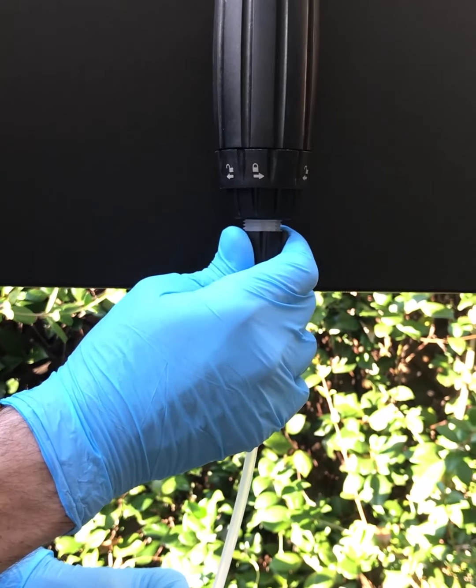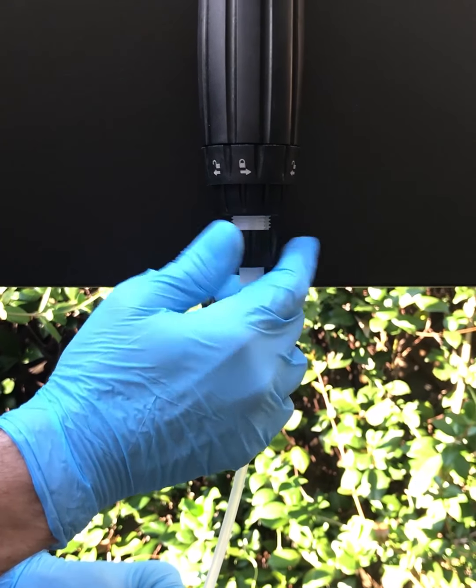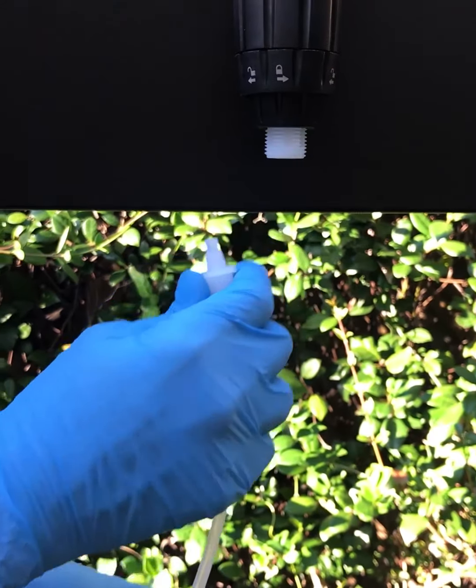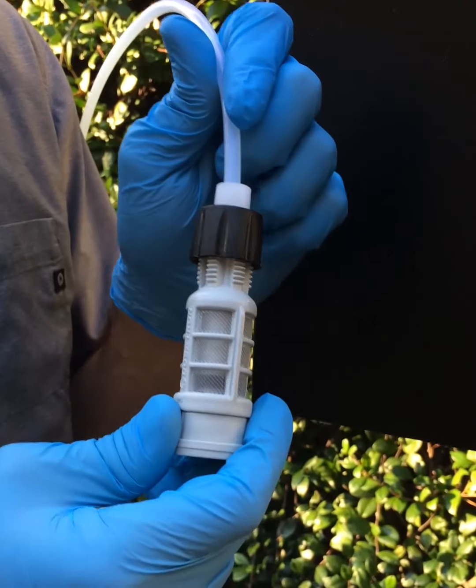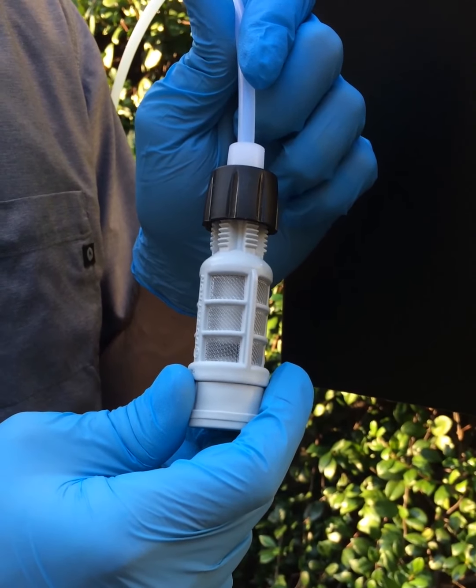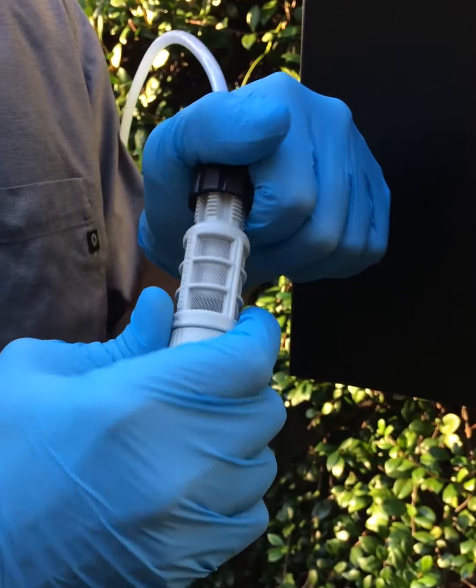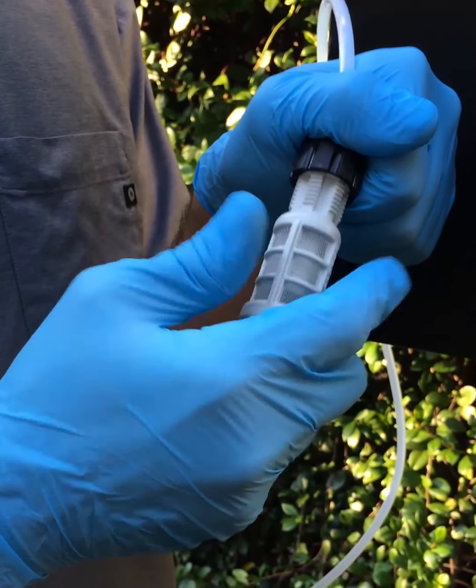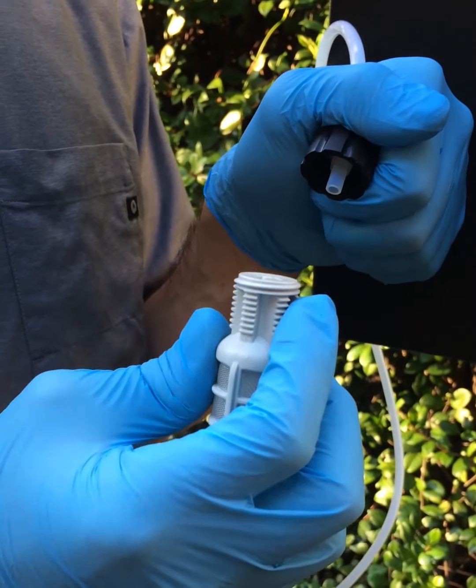To remove the hose assembly, simply loosen the hose nut and pull down on the ferrule and hose, removing from the unit. We're going to locate the strainer at the bottom of the hose. You can disconnect the strainer from the hose by loosening the nut and pulling the ferrule and hose off of the strainer.